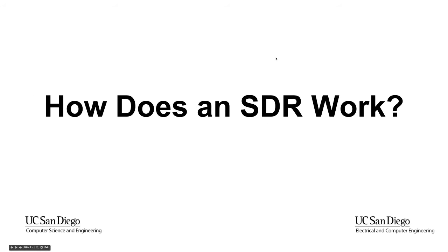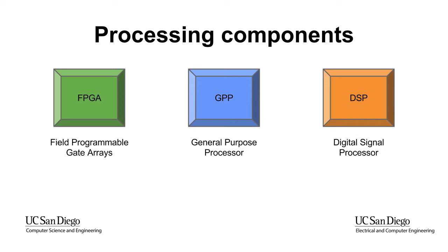So we know what an SDR is, but how does it work exactly? Let's start with the basic building blocks. An FPGA is essentially reconfigurable hardware — faster than software, but not as efficient at performing tasks as a chip solely created for one purpose. The GPP, or General Purpose Processor, is the same as the CPU in your computer; it is very good at doing one thing at a time, and you need more cores to efficiently multitask. The third piece is the Digital Signal Processor, typically made for doing complex or resource-intensive mathematical operations.